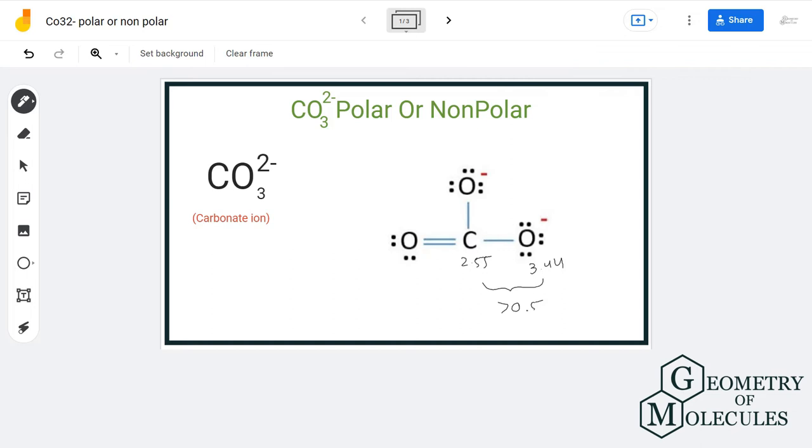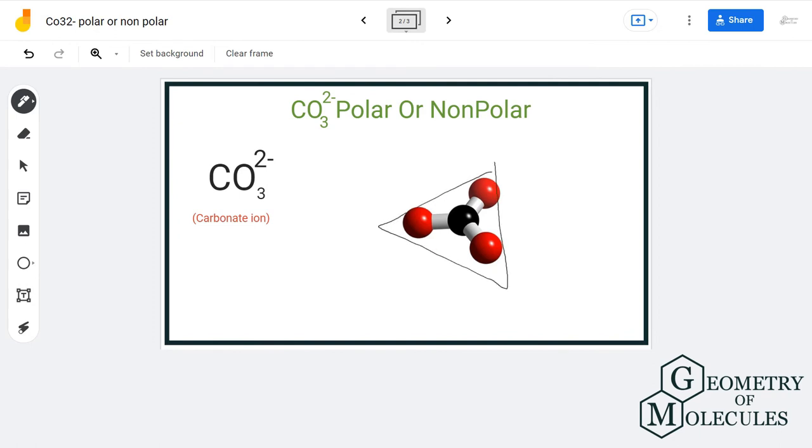So if we look at the individual carbon and oxygen bond, we can say that the bond has polarity, but the secret lies in the structure of the molecule. We can see here that carbonate ion has trigonal planar structure.